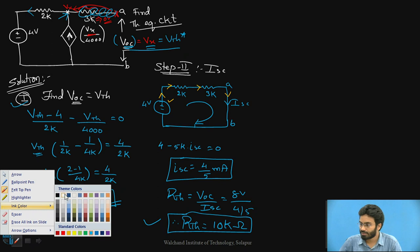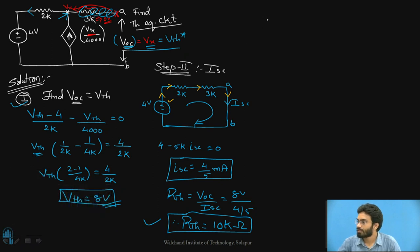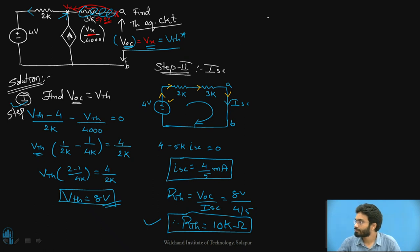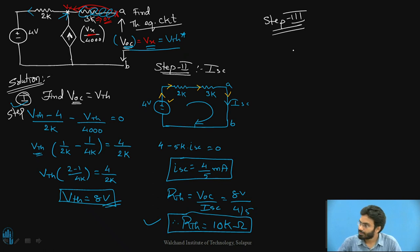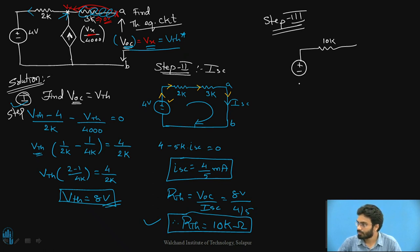Step 3 is drawing the Thevenin's equivalent circuit. We have RTH with a value of 10k ohms in series with the Thevenin's voltage VTH of 8 volts connected across terminals A and B. This closes our problem.